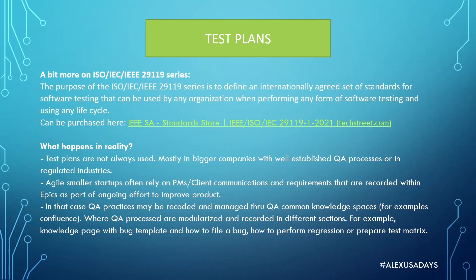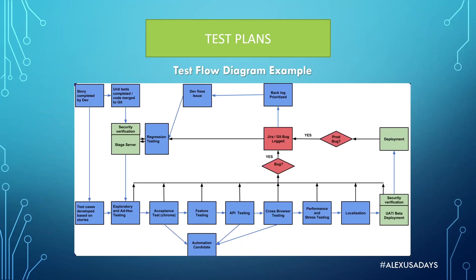Here's a diagram from a test plan example. The startup no longer exists so it doesn't really matter, but you can see how it looked. It starts with a story completed by developers — developers do their unit tests, there's security verification in place, and it goes into the stage server where regression testing is performed. Simultaneously, a test case is developed based on the stories within the epic, then exploratory testing happens right after the build is in the stage environment.